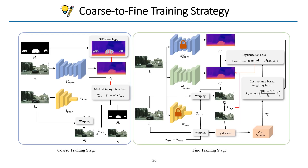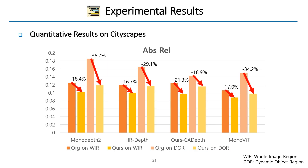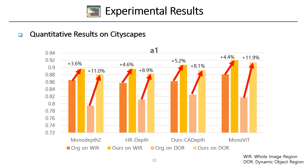This is an overview of our coarse-to-fine training strategy for the self-supervised monocular depth estimation pipeline. This training strategy can easily be integrated into existing depth estimation networks such as MonoDepth2 and MonoVIT. Here, we can see how our coarse-to-fine training strategy boosts the depth estimation performance of MonoDepth2, HRDepth, CADepth, and MonoVIT on the Cityscapes dataset, achieving state-of-the-art performance.